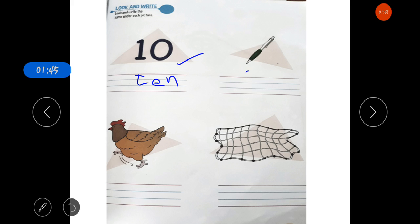This is pen. This is hen. Net. You have to write the correct words under the pictures. Clear?